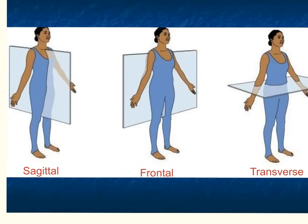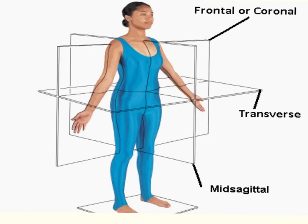Here we have the sagittal plane — notice the plane cutting right down the body, dividing it into right and left sides. If it is an equal right and left, we call this a mid-sagittal cut. The frontal cut divides the body into a front and a back, or anterior and posterior. The transverse cut separates the body into superior and inferior sections. Here is one more diagram showing all three directional body planes, and remember that anatomical planes can be used to help describe a body part, an entire body system, or to locate various structures and directions of movement.